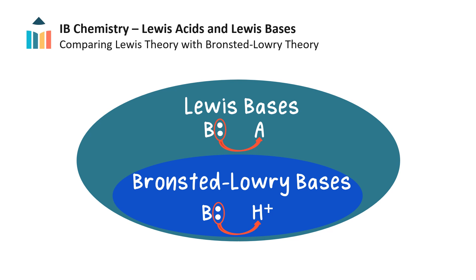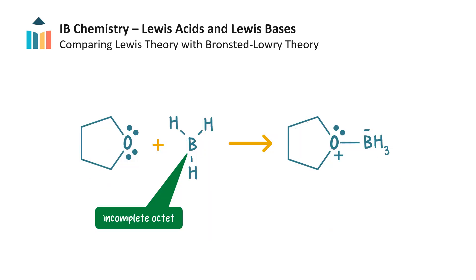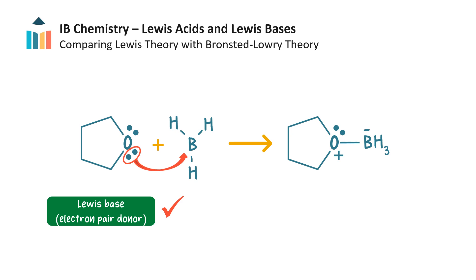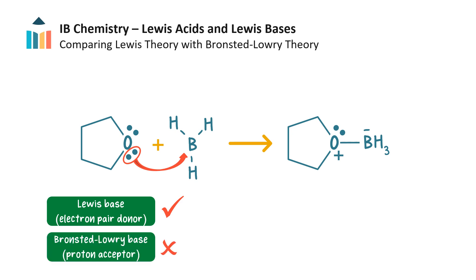However, not all Lewis bases are Bronsted-Lowry bases. Lewis bases do not necessarily donate a pair of electrons to a proton, but can donate the electrons to another species to form a bond. For example, in this reaction, boron has an incomplete octet and so has a vacant orbital available to accept electrons. The cyclic ether donates one of its lone pairs to boron, so the cyclic ether is a Lewis base. However, it does not accept a hydrogen ion or proton from borane, and so the cyclic ether is not a Bronsted-Lowry base.